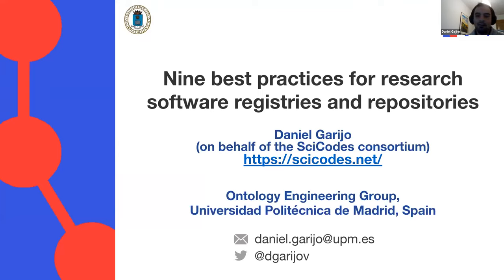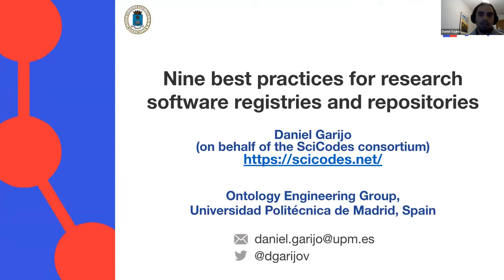Today I'm presenting some work on my own behalf, but it's on behalf of all the consortium for software registries and repositories — the SciCodes consortium — because it's work that we did all collaboratively, by no means my own contribution alone. The work we did is nine best practices for research software registries and repositories, which we discussed for a long time, as you will see in a second.